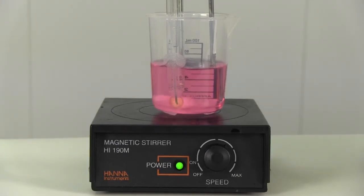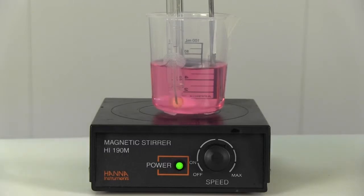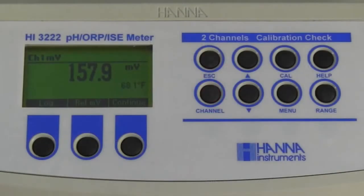In order to calculate slope, you need two values, so we need to take a second millivolt reading using a second different buffer. In this case, we will use pH 4 buffer. However, any other buffer can be used. Our second millivolt value using a pH 4 buffer is 157.9 millivolt.